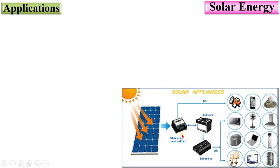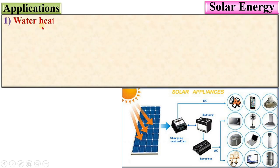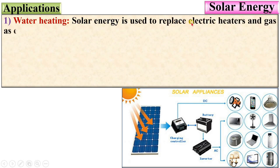Applications of solar energy. Here you can see, with the help of solar energy, you can use different home appliances. First, water heating. Solar energy is used to replace electric heaters and gas, as efficiency is more, with 50 to 30%.